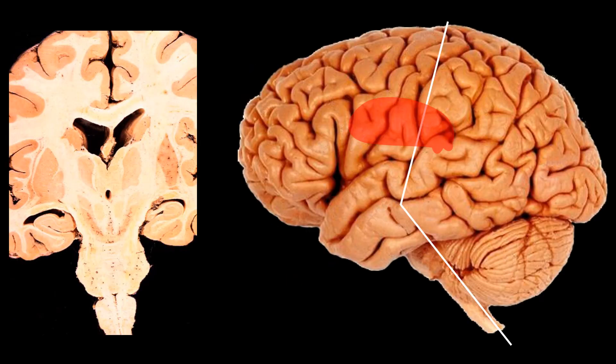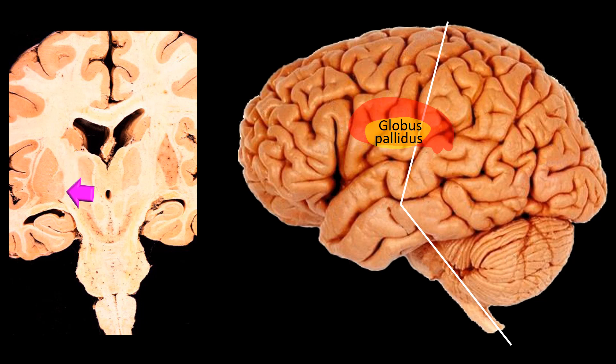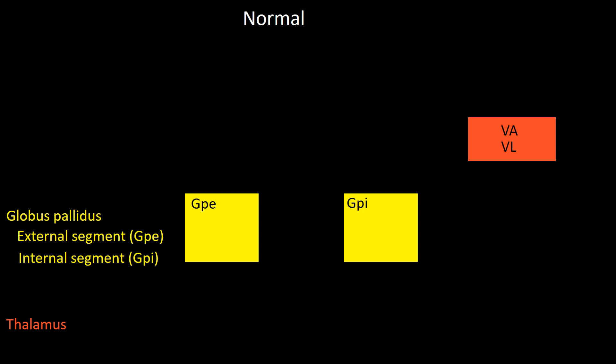The second structure, shown as a yellow structure, is the globus pallidus — the final output nucleus of the basal ganglia. The globus pallidus has two parts: the pars externa and the pars interna. I will add the globus pallidus to the basic figure as two yellow structures: one representing the external segment labeled GPe, and the second the internal segment labeled GPi.